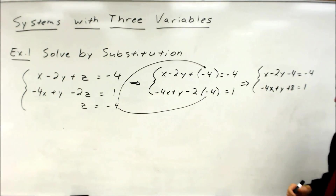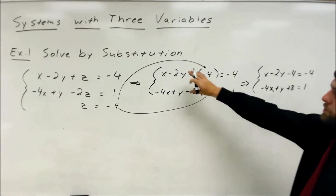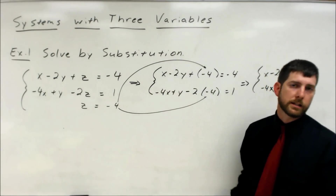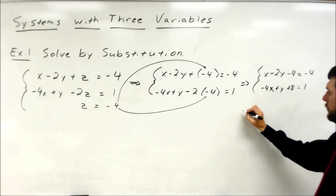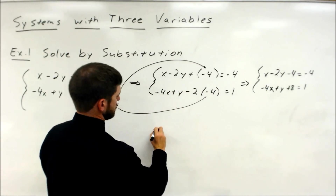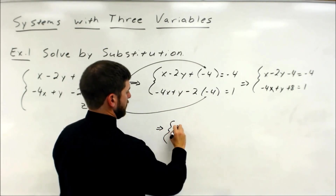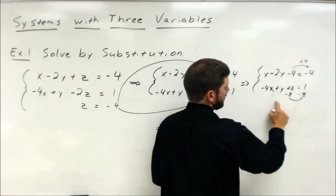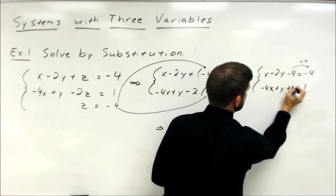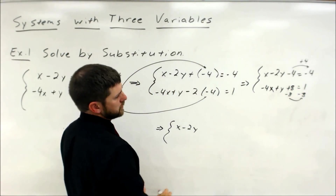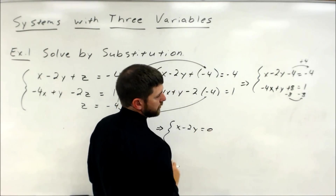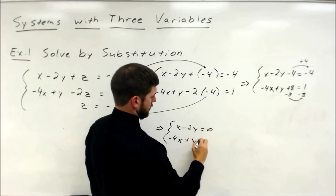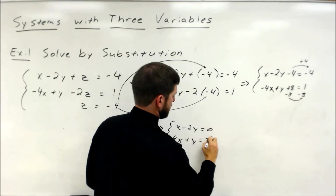From there, it's just a two-variable system. I'm going to do a linear combination on this one. The substitution doesn't mean I have to substitute every step; I can substitute just when I need it. So I'll substitute on the first step. I need to get my variables all lined up — my x and my y. I'll add my 4 over and subtract my 8 over. So we get negative 4 plus 4 equals 0; negative 4x plus y equals 1 minus 8, which is negative 7.